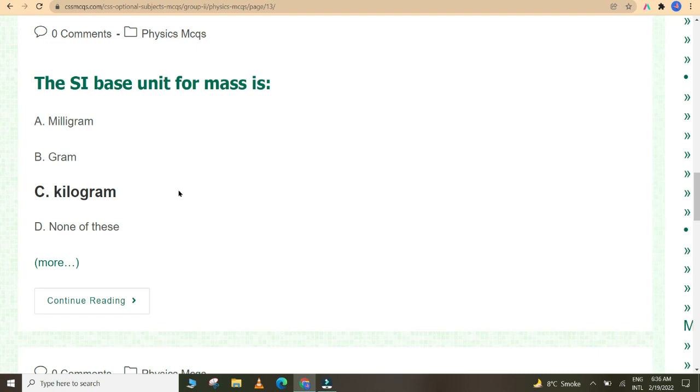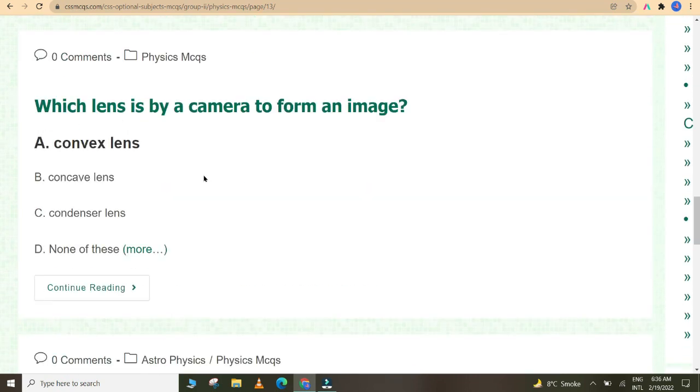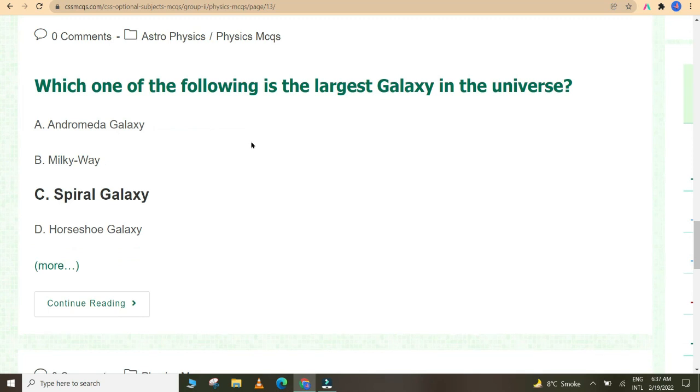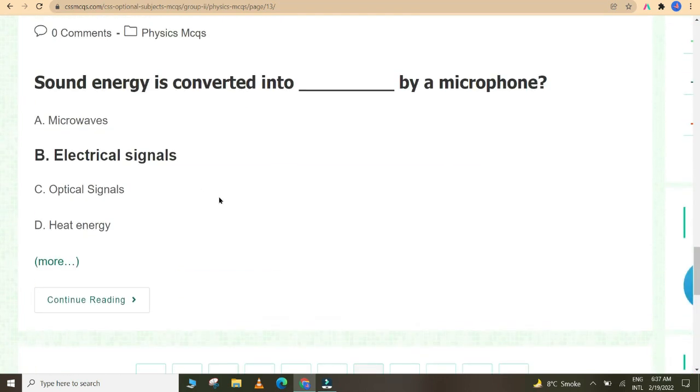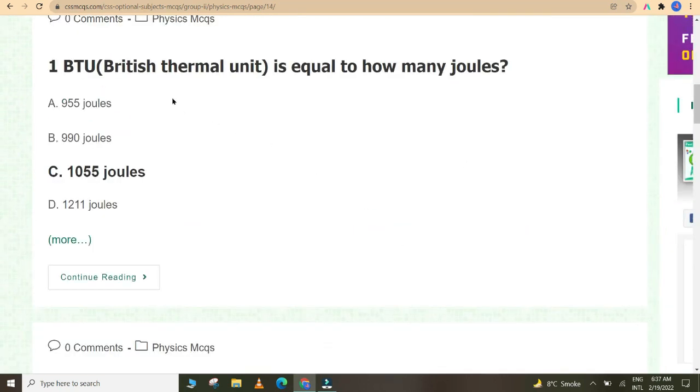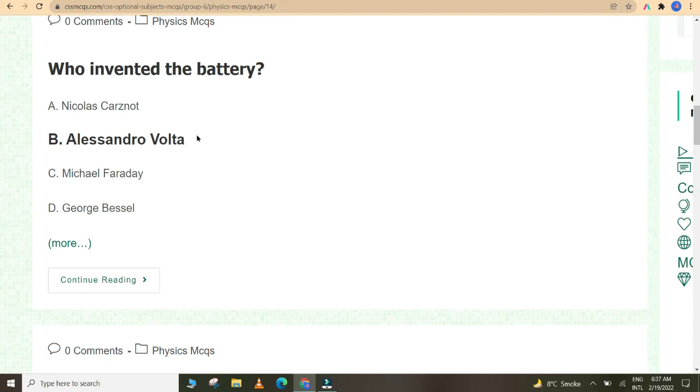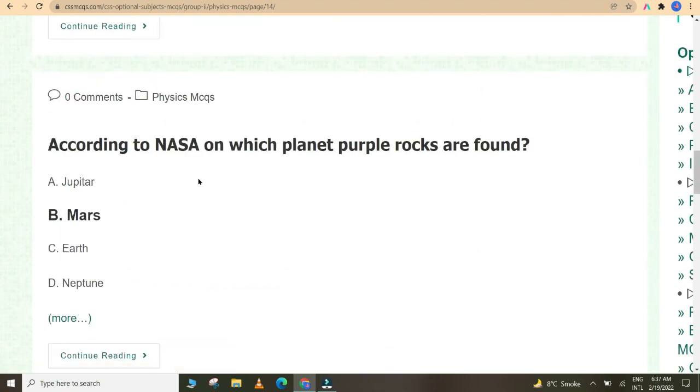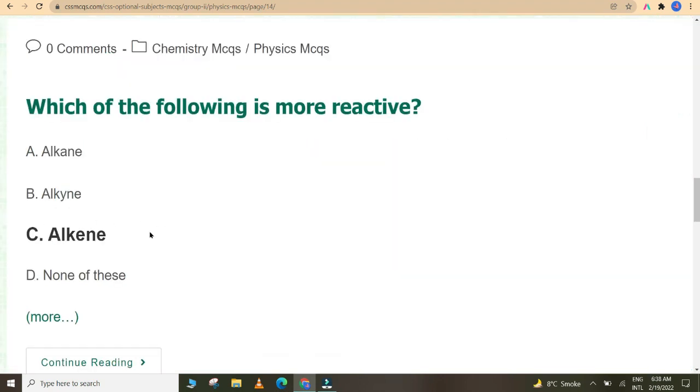The SI base unit of mass is kilogram. Which lens is used by a camera to form an image? Convex lens. Which one of the following is the largest galaxy in the universe? Spiral Seyfert galaxy. Sound energy is converted into electrical signals by a microphone. One BTU, British Thermal Unit, is equal to how many joules? 1055 joules. Who invented the battery? Alessandro Volta. Which energy is changed by a loudspeaker into sound energy? Electrical. According to NASA, on which planet purple rocks are found? Mars. Which of the following is more reactive? Alkene.